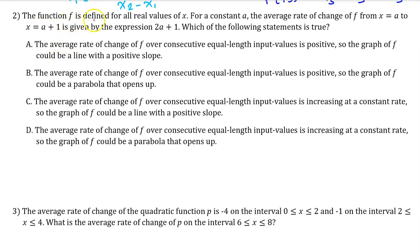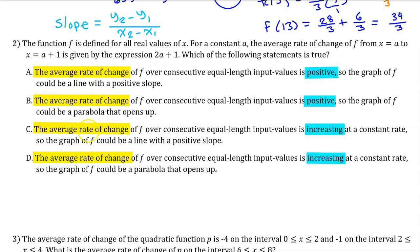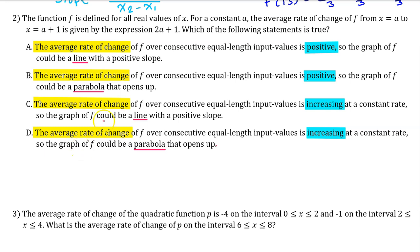Number 2. The function f is defined for all real values of x. For a constant a, the average rate of change of f from x equals a to x equals a plus 1 is given by the expression 2a plus 1. Which of the following statements is true? All of the answers are about the average rate of change — what happens when it's positive or increasing — and whether the graph of f could be a line or a parabola.